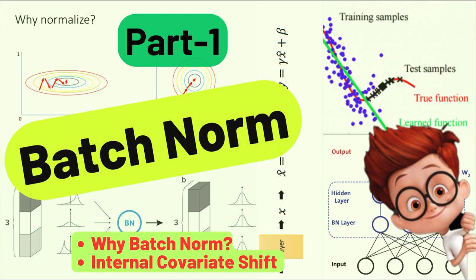I want to dig deeper into batch normalization, starting with understanding why we need it, what internal covariate shift actually is, what batch normalization is, how it solves the issue, how it accelerates training, how back propagation and derivatives work, what happens during inference, and what the advantages and drawbacks are. All these things I want to cover — they cannot be covered in a single video, so I want to make a three or four video series based on this topic.